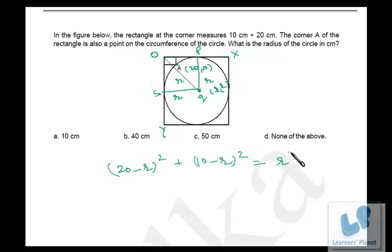Now you can put the values of R from the options. So if you put 10 it will be satisfied because 10 square equals 10 square, and even if you put 50 then also it will be satisfied. So our answer will be one of them, either 10 or 50.